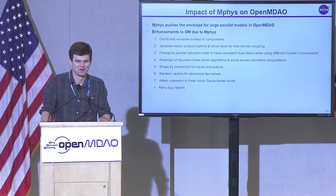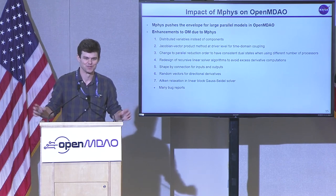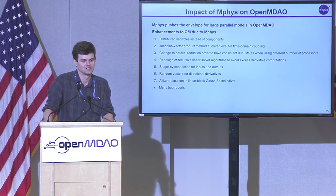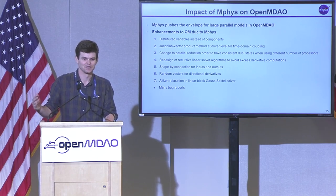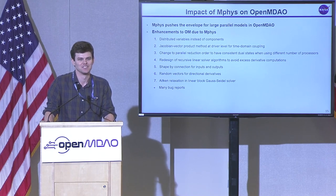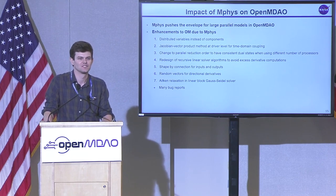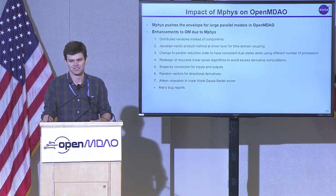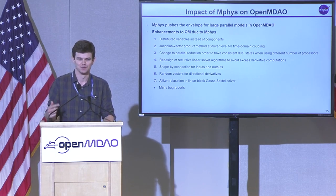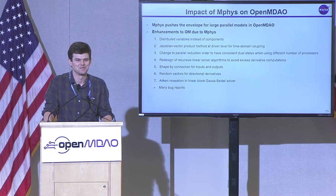There was a discussion yesterday about an arms race between developers and users. We're pushing not from large numbers of components, but from large distributed vectors — millions of degrees of freedom — and distributed computing, really pushing the limits of what OpenMDAO is doing. I pulled together a quick list of about seven things that have changed in OpenMDAO itself based on things happening in MFIS. A big one was distributed variables rather than distributed components, because most distributed code still has serial inputs like angle of attack. There are some efficiency changes as well.